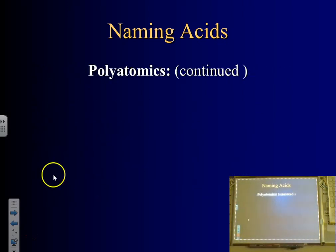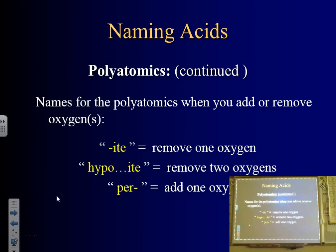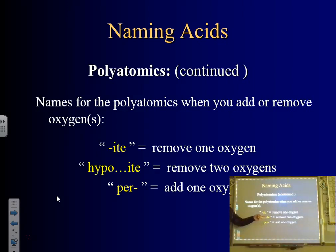Remember the box I gave you on the polyatomics? This is that information. Most polyatomics end in -ate, like chlorate, ClO3. If I remove one oxygen I have ClO2, so I call it chlorite. If I take another oxygen away and have ClO, that's hypochlorite. I can also add an oxygen to chlorate to make ClO4, called perchlorate.